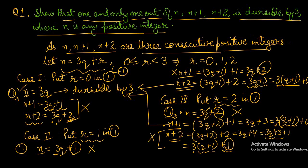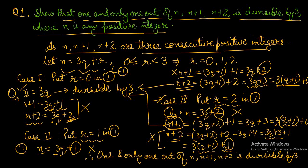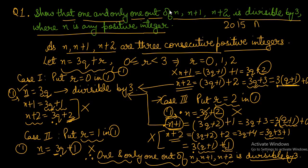So case number 3 also confirms that among these three numbers — n, n plus 1, and n plus 2 — only one is divisible by 3. This is how we have proved it. You should try it and revise it.